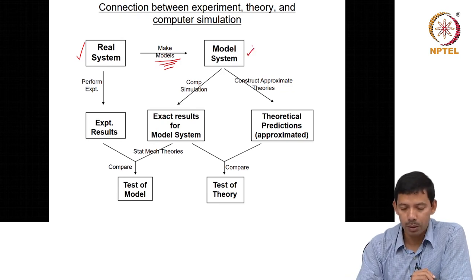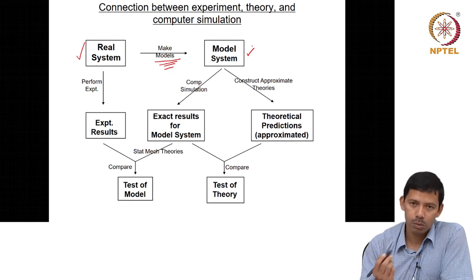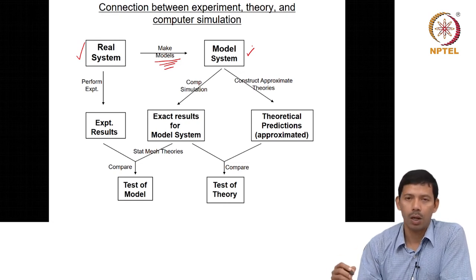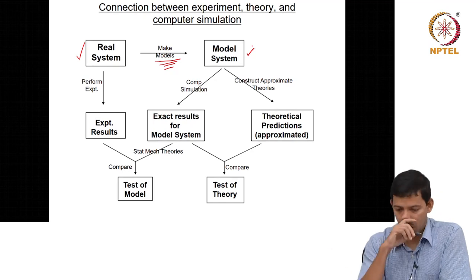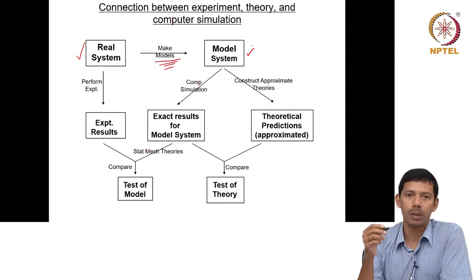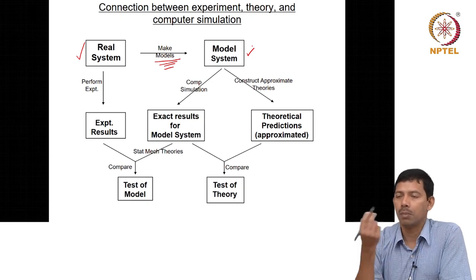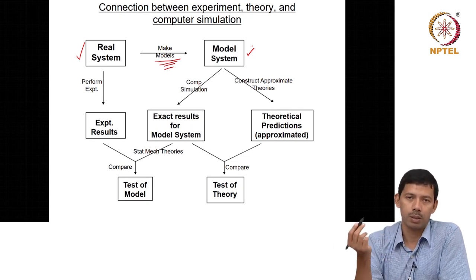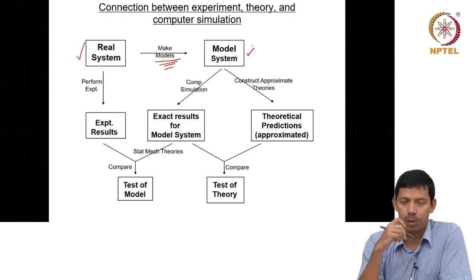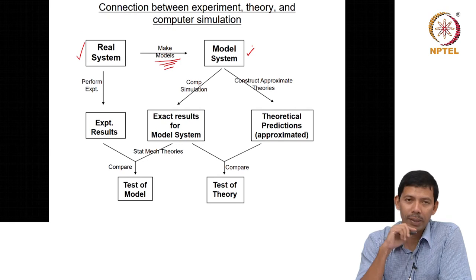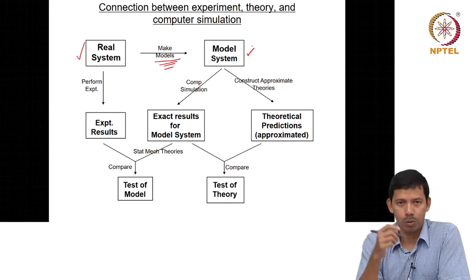What do you mean by making a model? You make a model of water by describing that it has hydrogen, oxygen, and hydrogen. It has an H-O bond, an O-H bond, a H-O-H angle, and it has a partial negative charge on oxygen and partial positive charges on the two hydrogens.